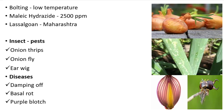Next is onion fly, Delia antiqua or Hylemya antiqua. In the seedling stage, maggots feed on the roots and the swelling portion of the seedling. In older plants, the leaves become yellow and the plant wilts. Coming on to earwig, Forficula auricularia, both the maggot and adult bore into the bulb and feed on the edible bulb itself.